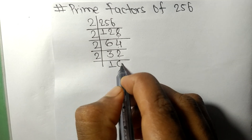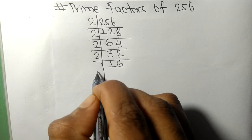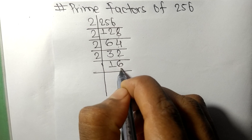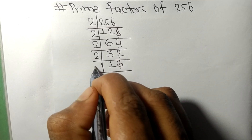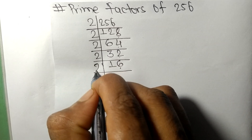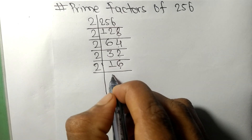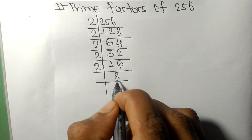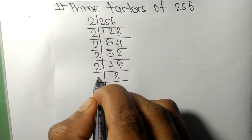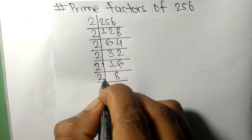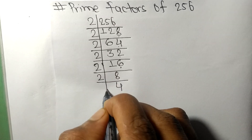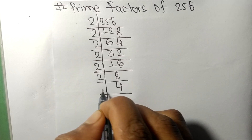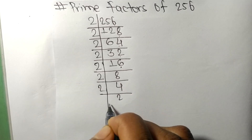Two times six is twelve, so again we have even number six, which is divisible by 2. Two times eight is sixteen, even eight is divisible by 2. Two times four is eight, two times two is four.